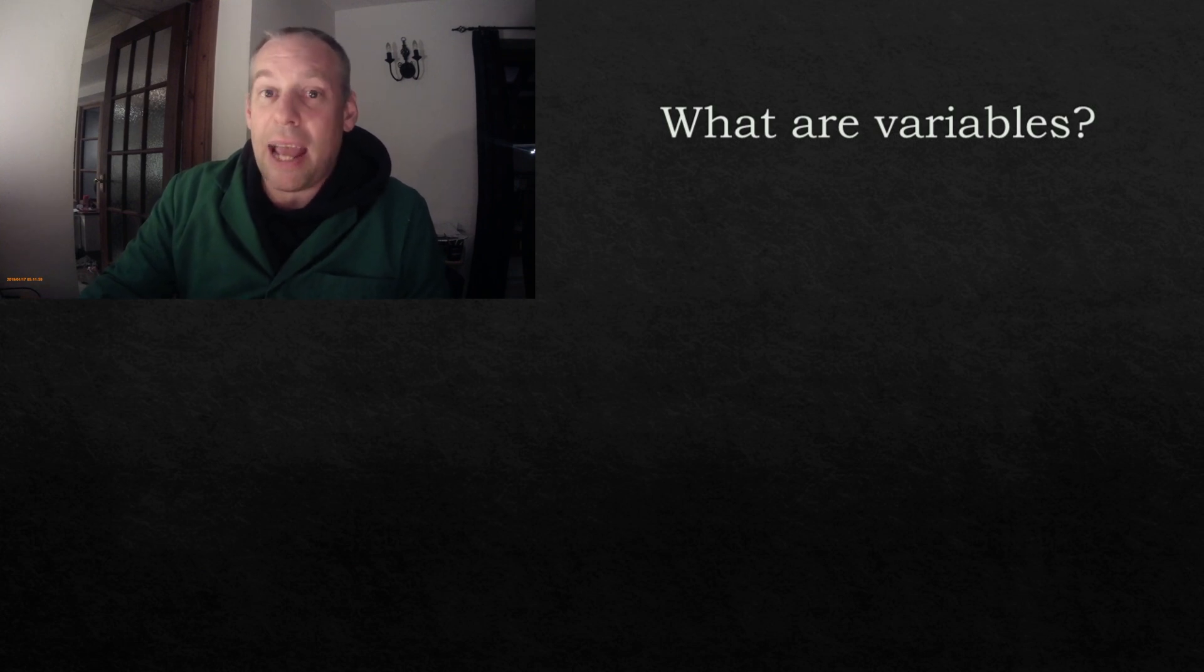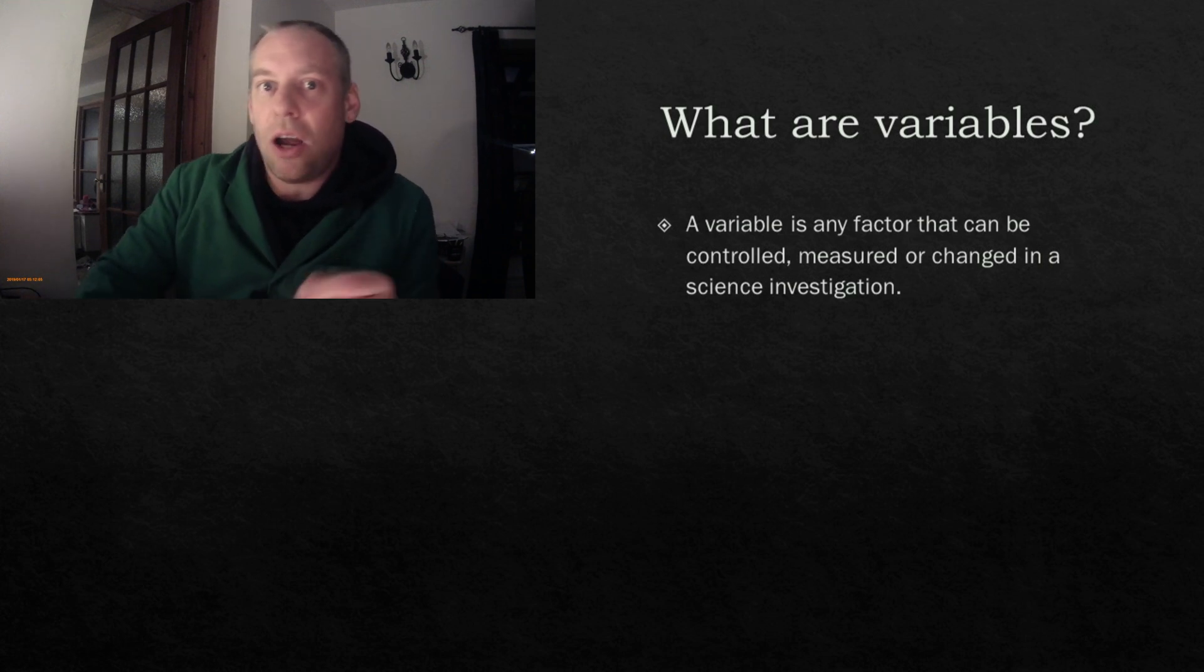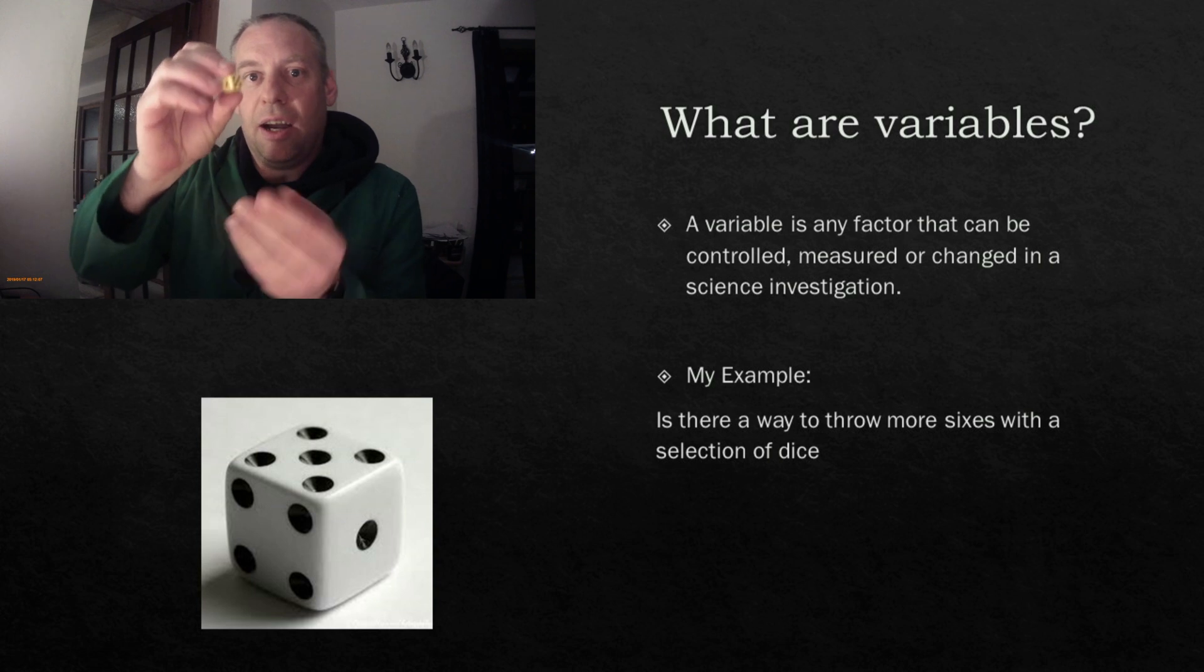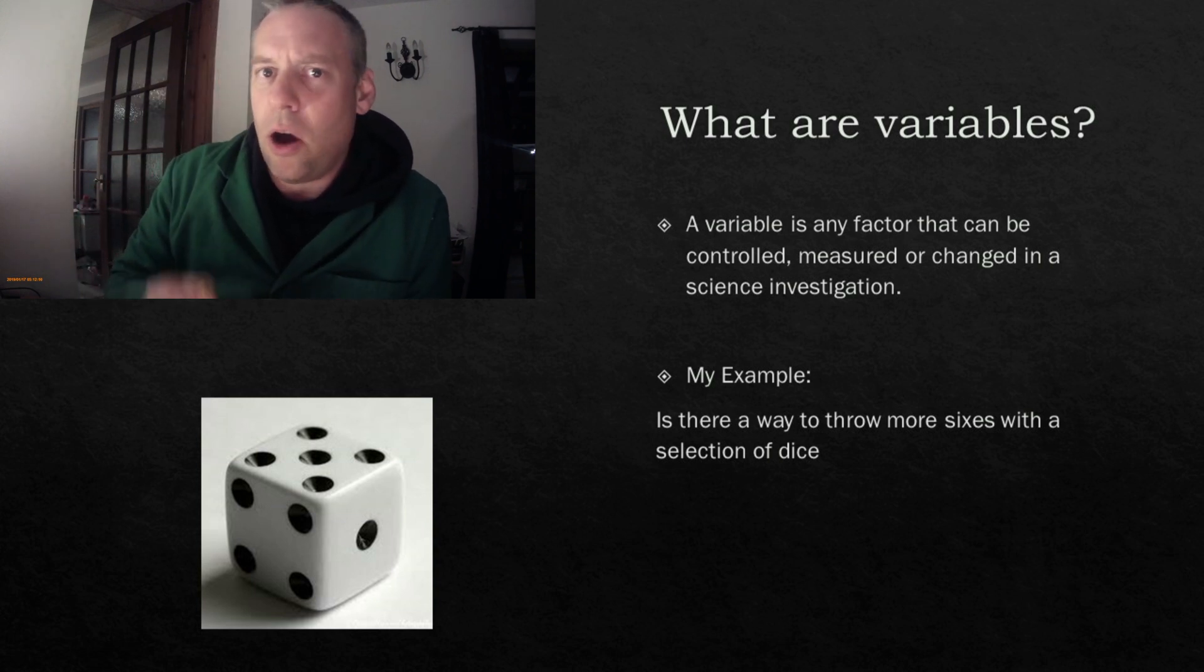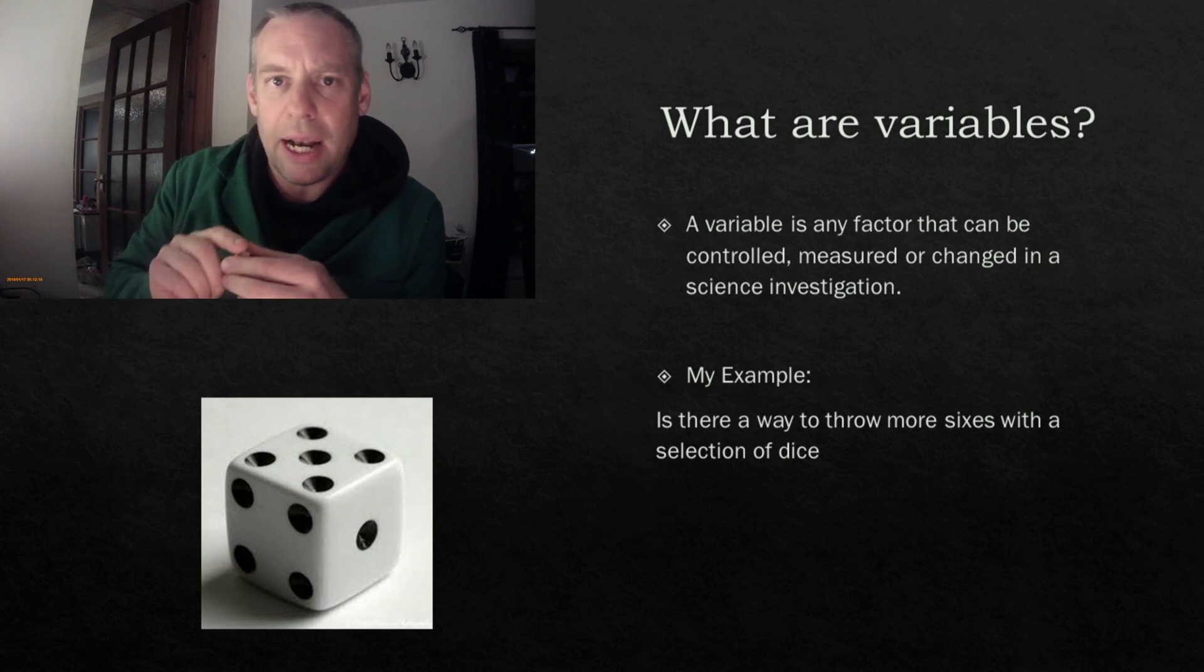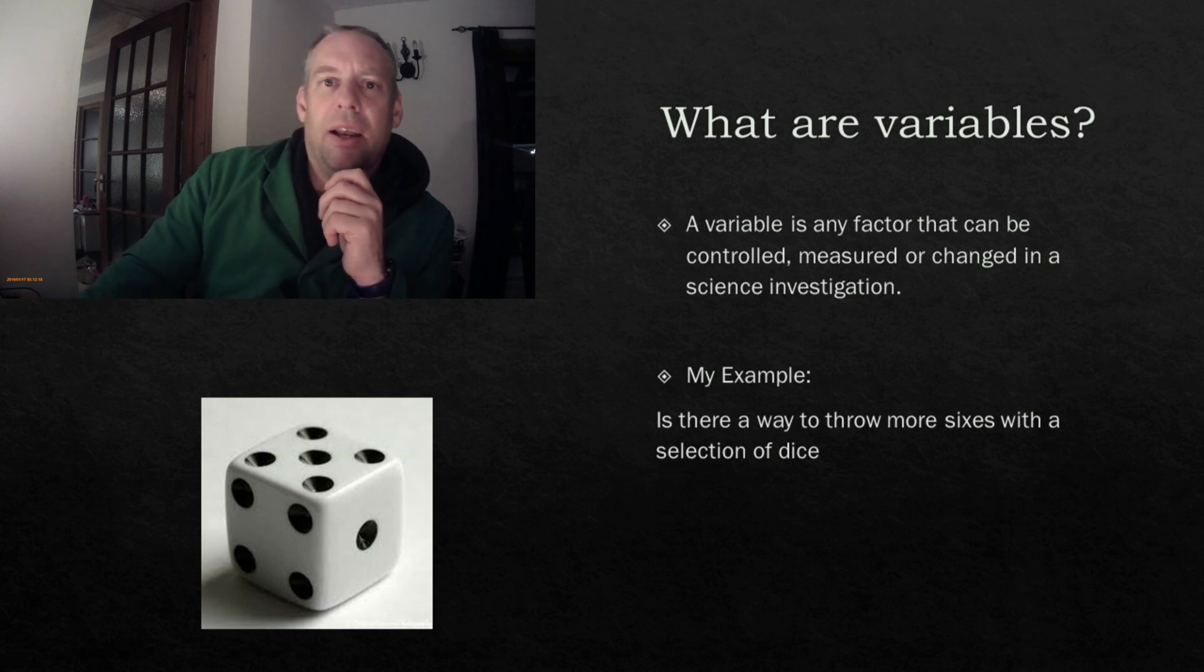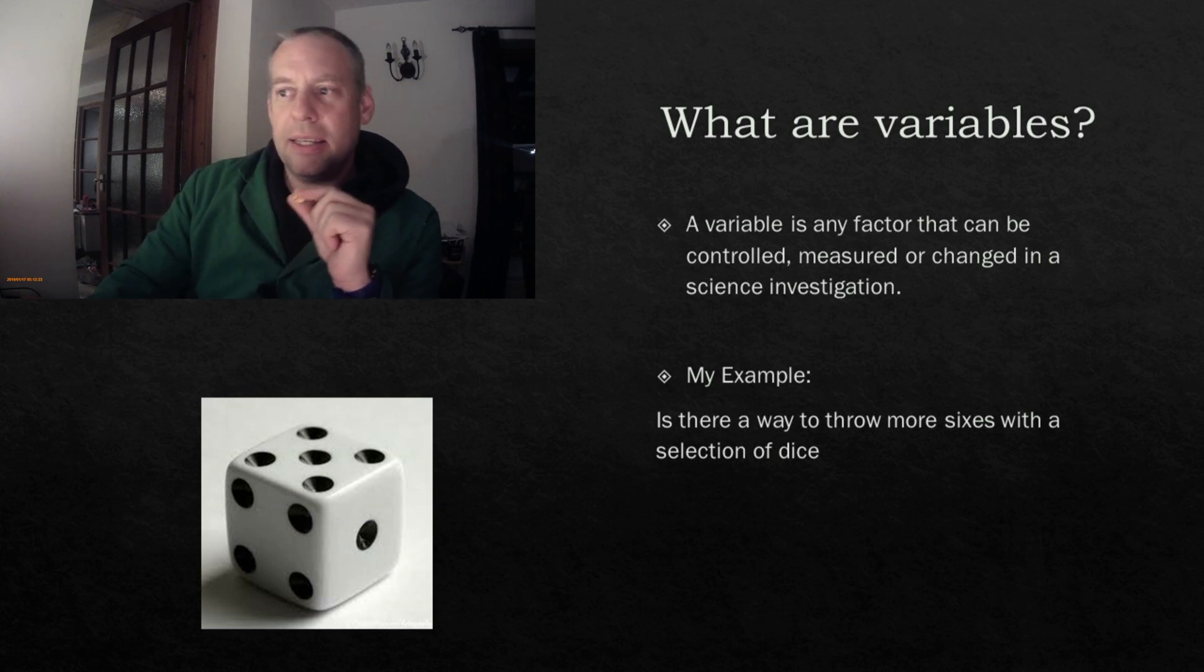Now a variable is any factor that can affect the outcome of an investigation. For this I'm going to be investigating dice and I really want to know how I can cheat on games I play with my children and make sure that I get sixes more often. This is what I'm looking at. So I start thinking of all the variables that might be able to affect whether I get a six.